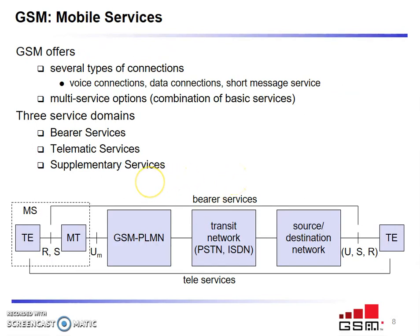GSM provides various services: bearer services, tele services, and supplementary services. In the diagram, the mobile station is a terminal connected to the GSM Public Land Mobile Network (PLMN), which is the basic infrastructure needed for GSM. This PLMN is connected to transit networks — PSTN (Public Switched Telephone Network) and ISDN (Integrated Services Digital Network).